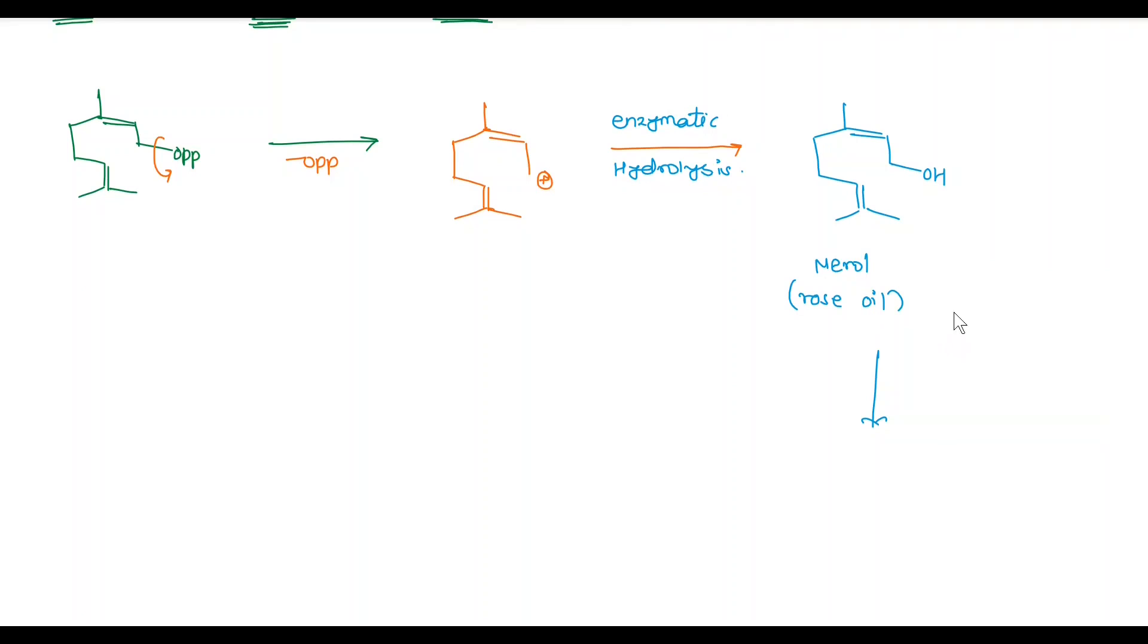In the next step, enzymatic oxidation takes place with the help of NAD plus and we get this kind of moiety: here double bond oxygen, called neryl. It is also called as Z-citral and lemon oil.